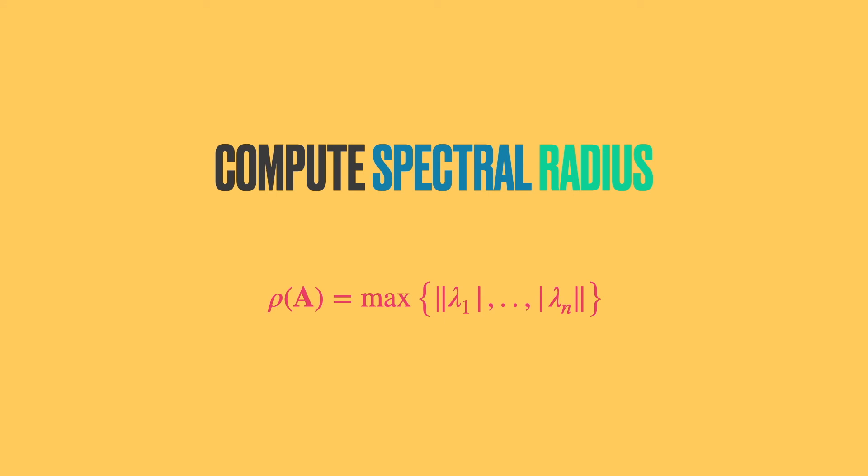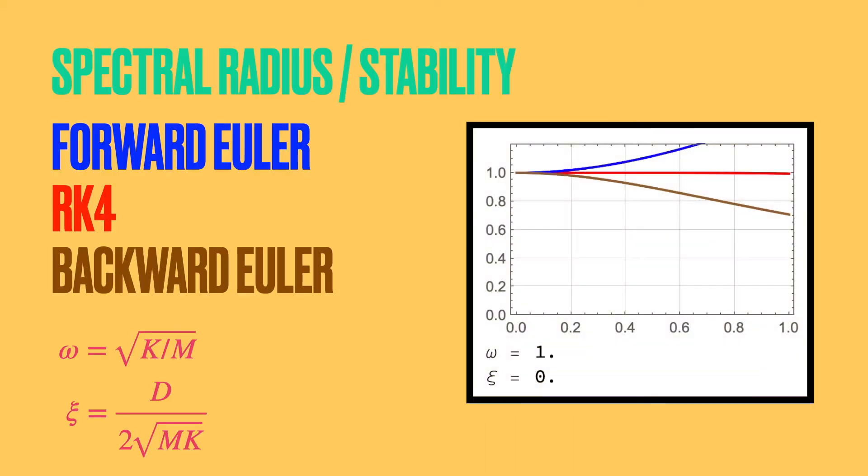Now that we have the amplification matrices, we can compute the spectral radius to see if the method is stable, and also analyze the conditions under which the method loses stability. Here is shown on the right-hand side, the spectral radius as a function of the time step size. On the x-axis, we have the time step size, and on the y-axis, we have the spectral radius. For the three methods, the forward Euler method shown in blue, the RK4 method shown in red, and the backward Euler method shown in brown.